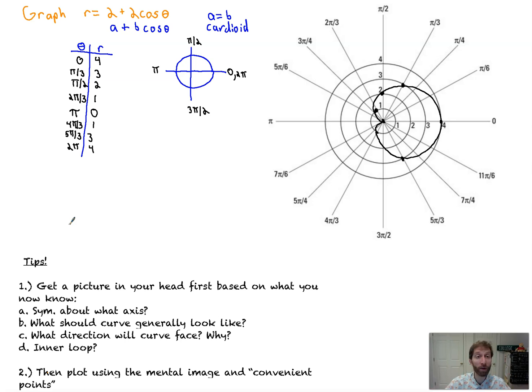So a couple of tips just as we round this out. Number one, you want to get a picture in your head first based on what you now know. So you're going to look at a graph and say, oh, it's cosine and only in terms of cosine, we're symmetric about the x-axis. Cool. That'll help us down the road. What should the curve generally look like? You're going to study it and say, well, A equals B. It's going to be a cardioid. Maybe you even go further and say, I know it's going to face, its maximum value will face to the right and the butt, if you will, that inner part here makes it a heart, will be on the left side because that's where r will equal 0. And that really, honestly, is going to help you kind of predetermine what this thing will look like. And just practice. The more you practice, the fewer points you'll have to plot, the better you'll get at putting these things on paper. And then plot using the mental image and convenient points. Convenient points are points that don't give you like root three over two or root two over two. Go for the one-half, the zero, and the one.